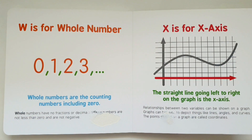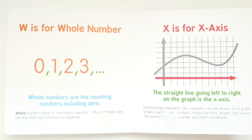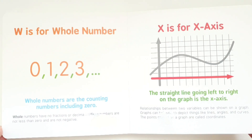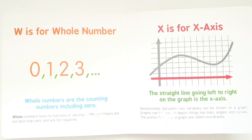W is for whole number. Whole numbers are the counting numbers including zero. Whole numbers have no fractions or decimals. Whole numbers are not less than zero and are not negative.